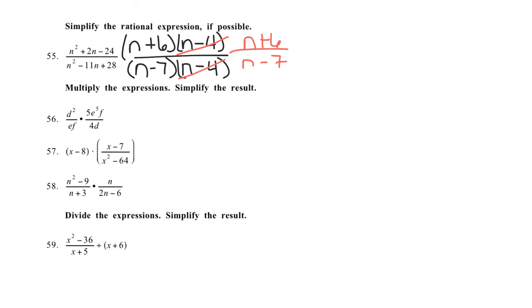So 56, on these ones I kind of like to just multiply across the top first, so I get 5e to the fifth df, and I like to write my variables in the same order in the denominator, so I'm going to go e4, ef times 4d is 4edf. Now I can use my exponent properties to divide out the f, the d, one of the e's cancels one of these e's and makes it to the fourth power, so I get 5e to the fourth over 4.